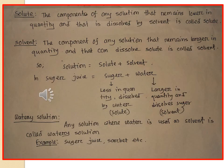Now I would like to say something about solute. The component of any solution that remains lower in quantity and that is dissolved by the solvent is called solute. We know that a solution is the combination of solute and solvent. So the solute must be present in lower quantity in the solution and it must be dissolved by the solvent.